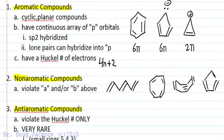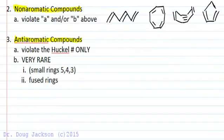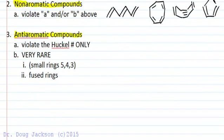So for anti-aromatic compounds, we are going to violate the Huckel number rule only. These are very, very rare, so if you've got to guess, non-aromatic is probably the way to go.